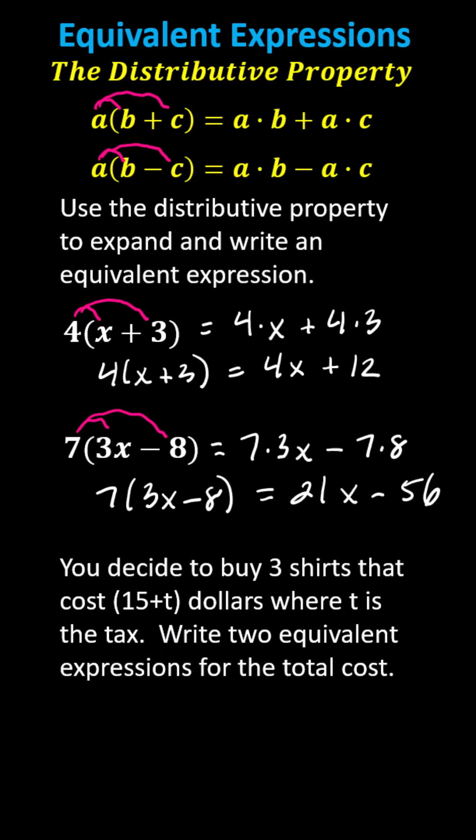One way to write the total cost, because you're buying three shirts and the cost of each shirt is fifteen plus T dollars, is three times the quantity fifteen plus T.